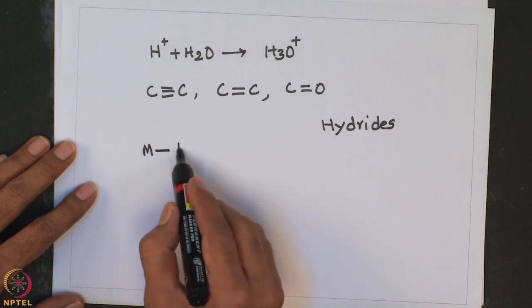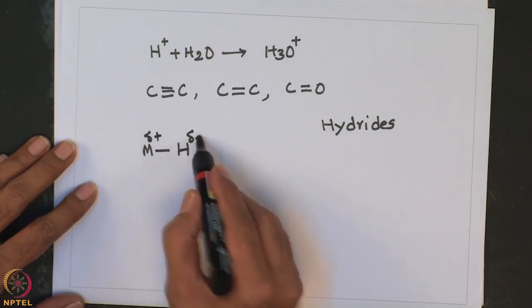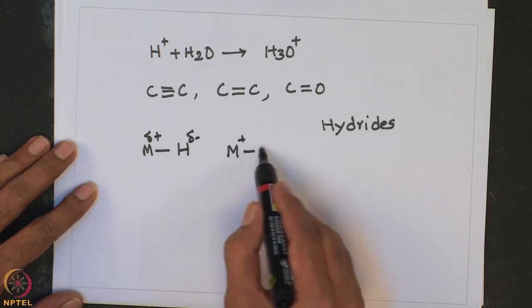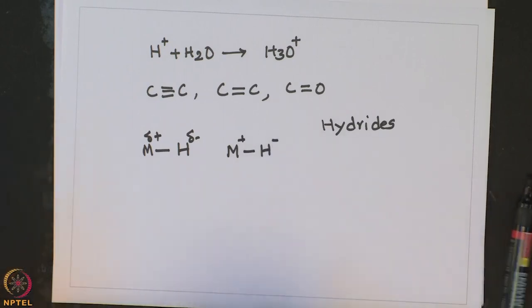There are three different types of hydrides: ionic hydrides, covalent hydrides, and metallic hydrides. Metals with electronegativity less than 1.2 form ionic hydrides — in this case there is δ+ on the metal and H−. That means alkali metals or alkaline earth metals combine with hydrogen to form ionic hydrides, where hydrogen behaves similar to halogens as both are one electron short of the next inert gas configuration.